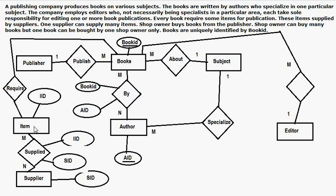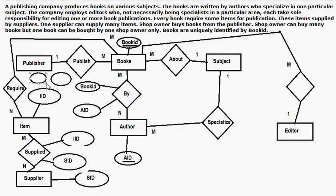One book requires many items, and one item can be required for many books, so this will be a many-to-many relationship. It is getting quite congested, but there will be an Item ID and a Book ID for the relationship table.